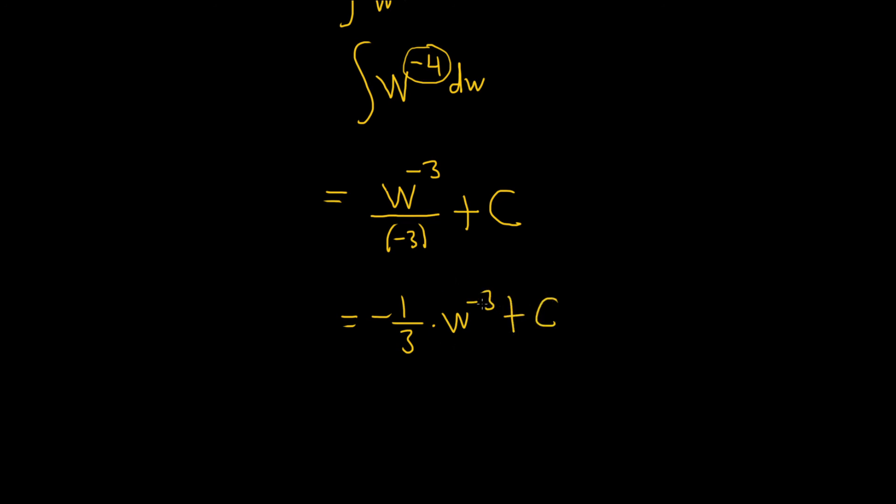And if you really want to, you can bring this back down. So this is negative 1 third times. And when you bring it back downstairs, it becomes positive. So W cubed plus C. So that would be probably one of the best forms of the final answer. This would be okay too, but if you don't want to leave negative exponents, then obviously this is a better choice. I hope this video has been helpful.